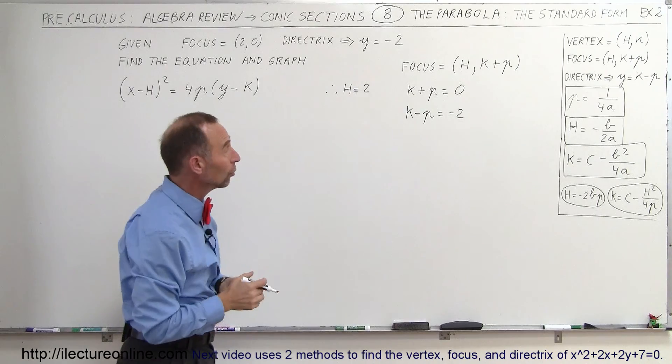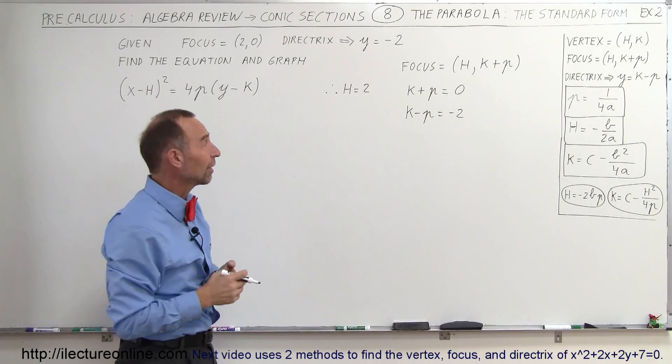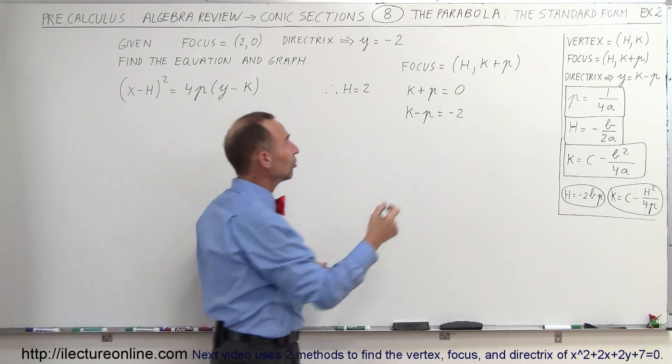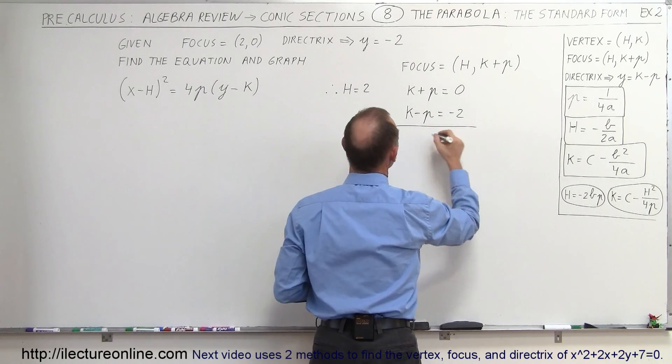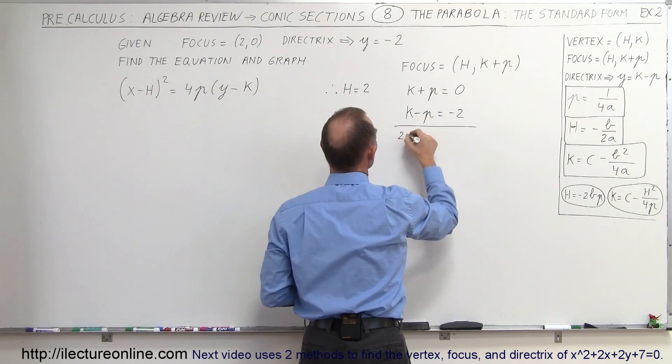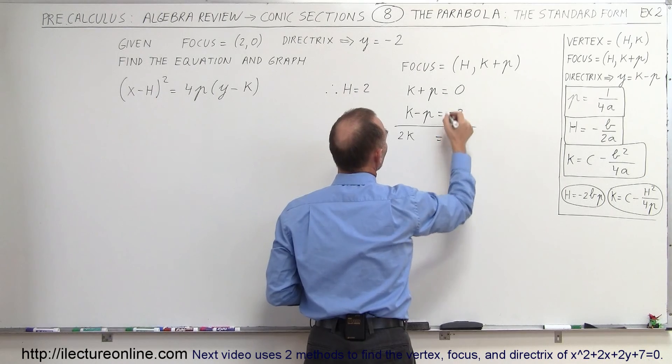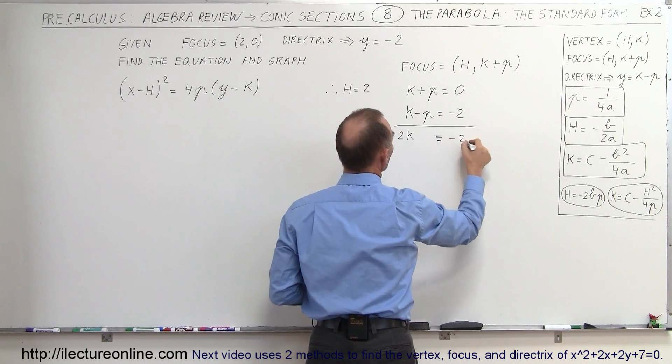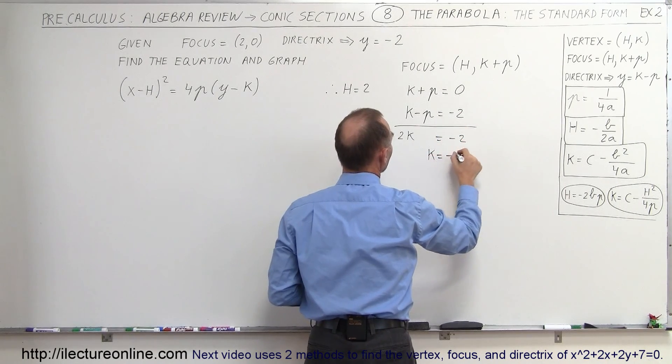So now we have two equations and two unknowns, so we are able to solve for either k or p. Let's just go ahead and add the two equations together. So we have k + k is 2k, p plus a negative p is 0, and 0 plus -2 is -2. So therefore k is equal to -1.